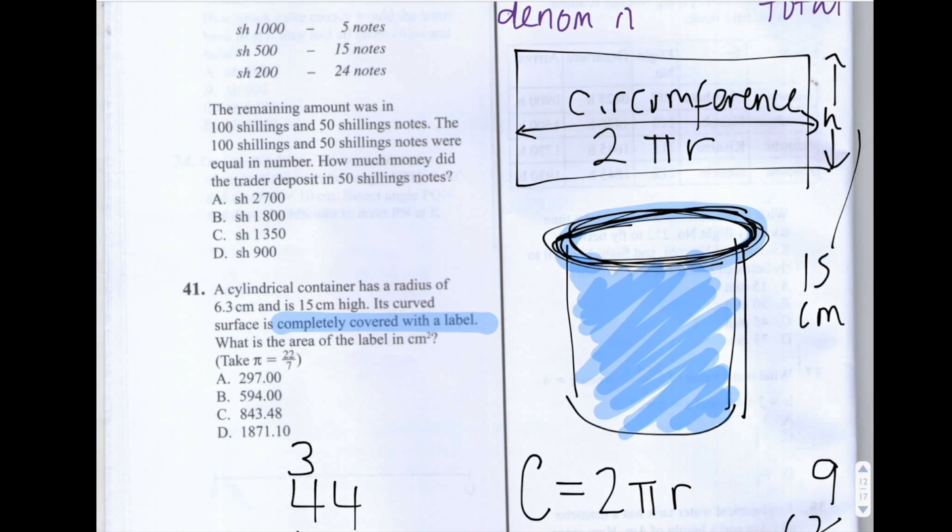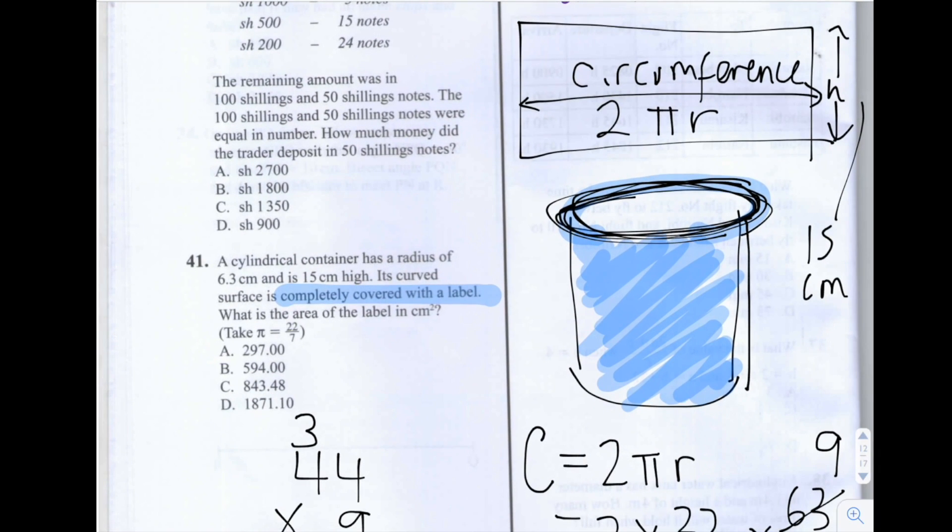So we know one of our dimensions here, this length here. And we know that is 39.6. Then we times that by the height, it's 15. And that will give us the complete area of the label. So the multiplication we're doing is 39.6 multiplied by 15.